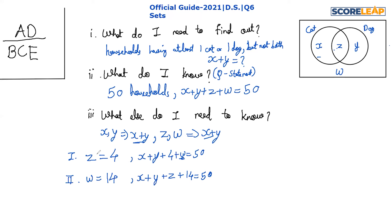Since Statement 1 is not sufficient, we cross out options A and B — never forget this step in the examination. Statement 2 says the number of households with no cats and no dogs is 14, so w equals 14. Then x plus y plus z plus 14 equals 50, but we don't know z. Statement 2 alone is also not sufficient, so we cross out option B.